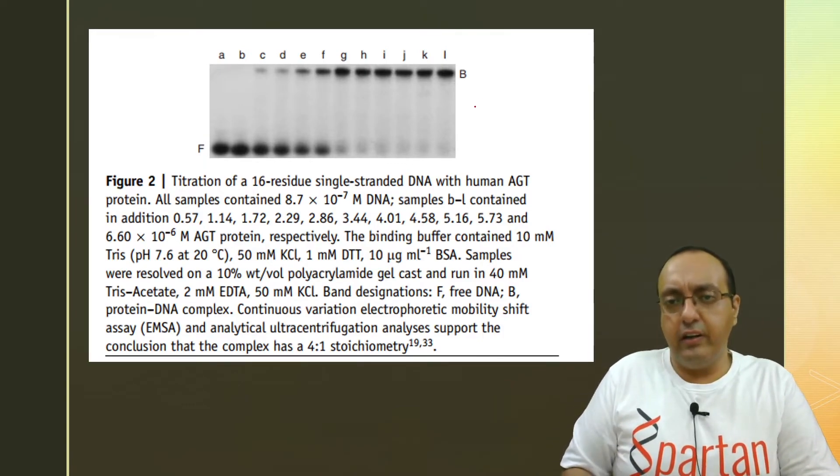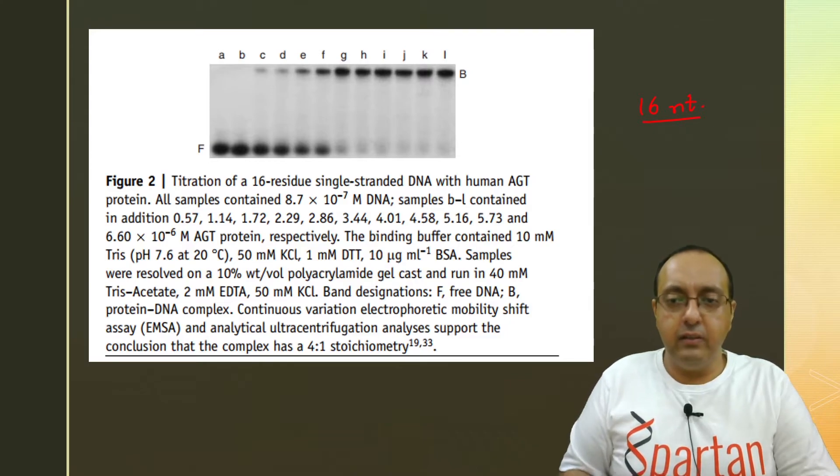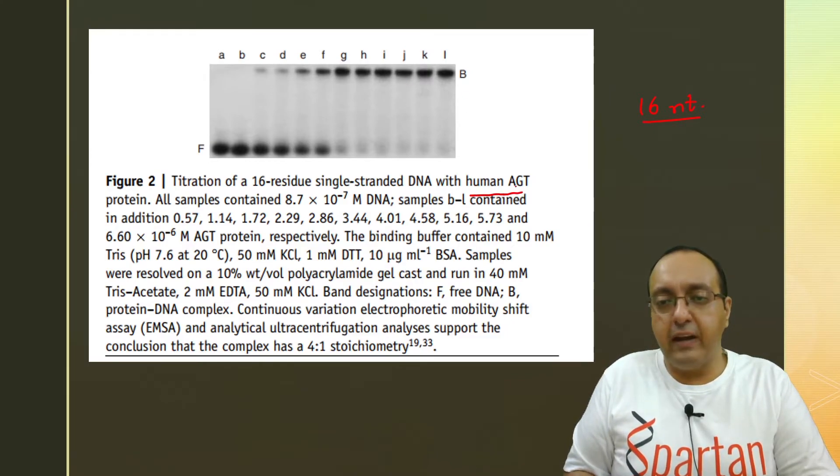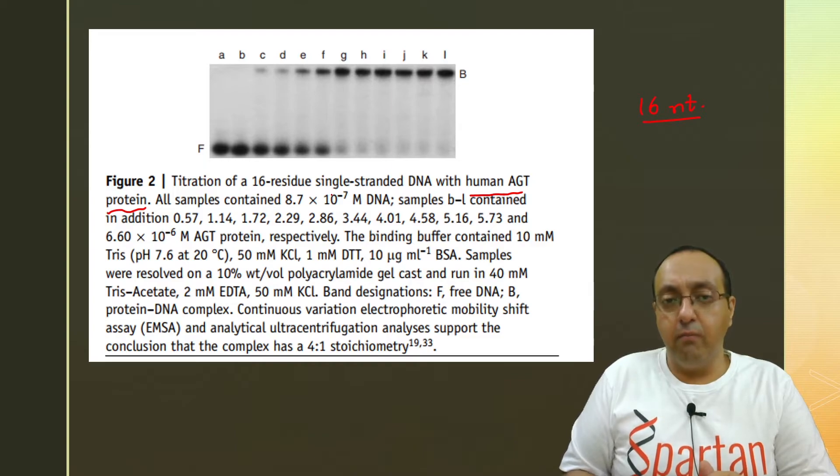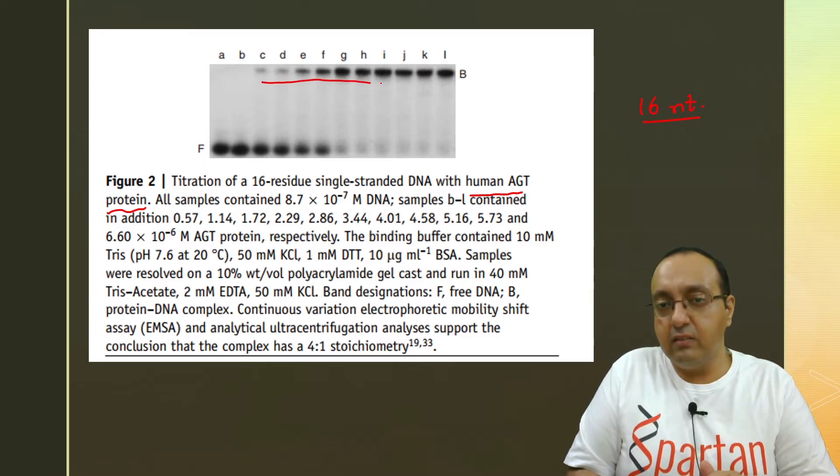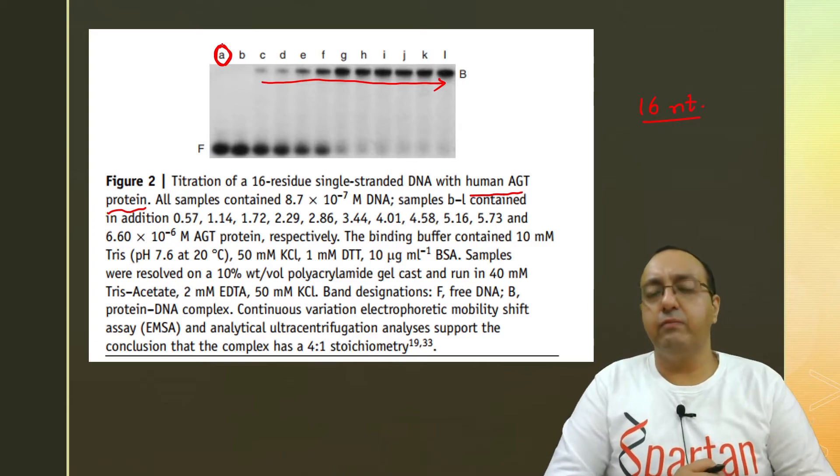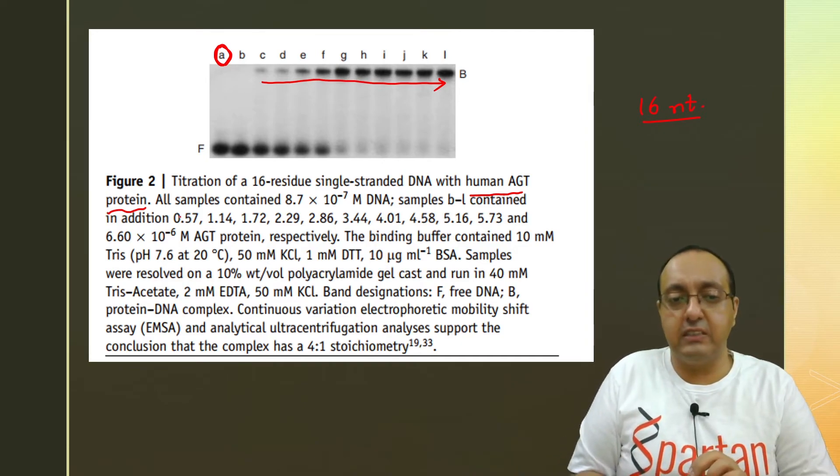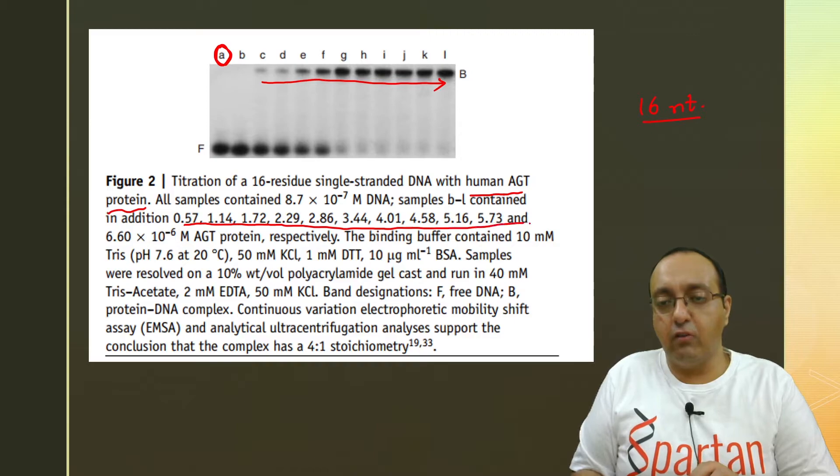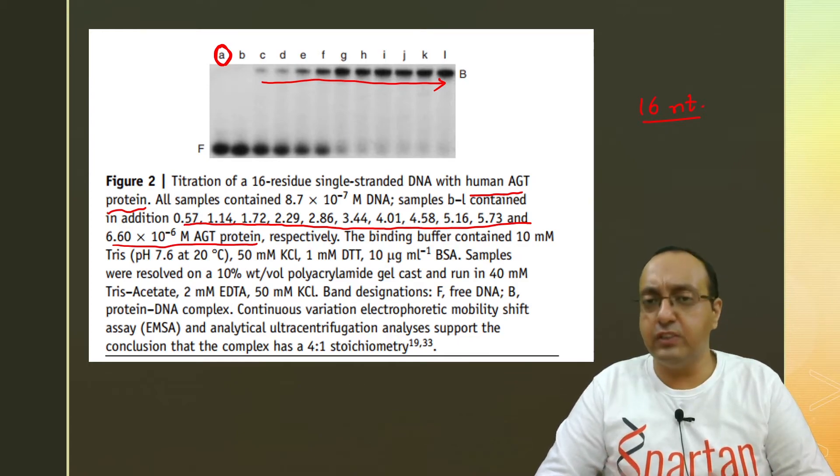Here is an example of a 16 residue, very small single stranded DNA. So I told you that usually the range of DNA fragments is pretty much between 50 and 200 base pairs. So here we are using a smaller fragment and we are using it to prove the binding to human angiotensin precursor protein. And we are using more and more amounts of protein here. In the A well, there is no protein here, but B to L, there is increasing amount of protein. So you can see 0.57 almost double the amount of protein in each well. These are micromolar amounts, but these are sufficient to produce this shift.